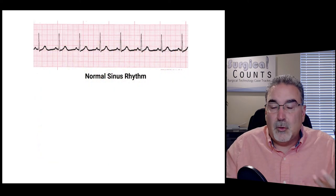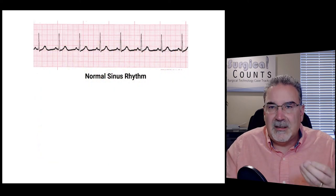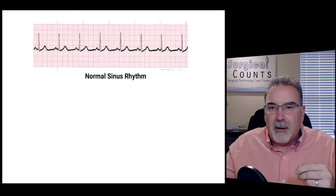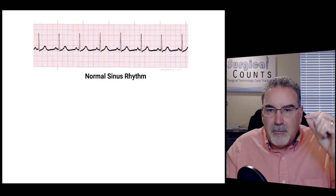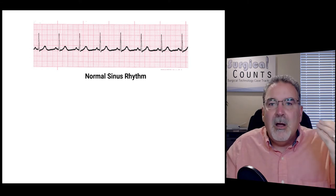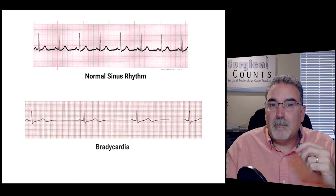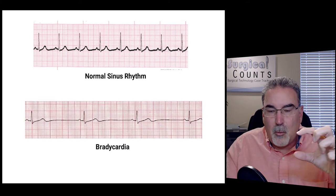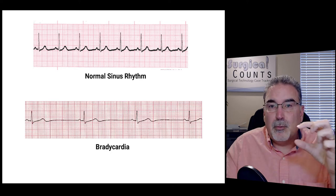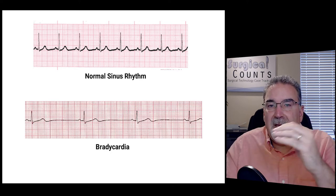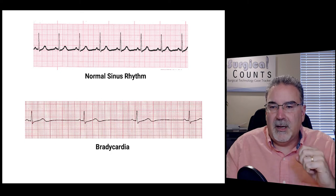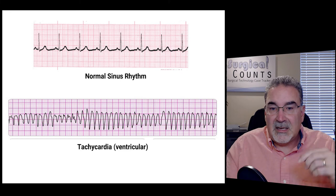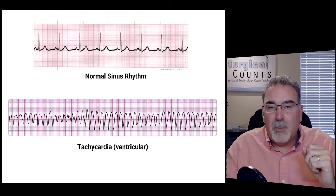This is what a normal sinus rhythm looks like - sinus meaning a wave in a regular pattern, with steady, evenly spaced beats. Bradycardia means slow - you have a beat and then a long wait until the next one; that's a low heart rate. And the opposite is tachycardia - a very rapid or fast heartbeat, with beats coming in quick succession.